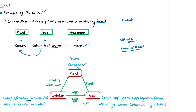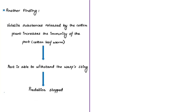In the cabbage example, the predatory wasp Cotesia vestalis injects eggs into the body of the worm; these eggs hatch inside and feed on the cabbage worm as they grow. The cabbage worm is harmed and the offspring of the wasp is benefited. The news article also talks about another interesting finding: scientists found that when the worm feeds on cotton plant leaves and the leaves release aromatic and volatile vapors, the immunity levels of the pest are boosted.